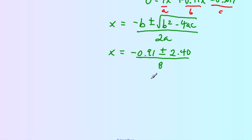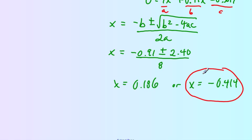When we solve for x using the quadratic equation, we get 2 roots. In chemistry we only want one answer. One root is negative 0.91 plus 2.4 divided by 8, which is 0.186. The other is negative 0.91 minus 2.4 divided by 8, which is negative 0.414. There's a problem with this one because concentrations cannot be negative. We ignore the negative root because it has no real meaning. Concentrations are always positive. So x equals 0.186.